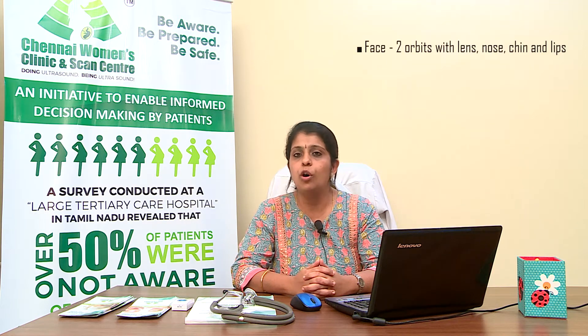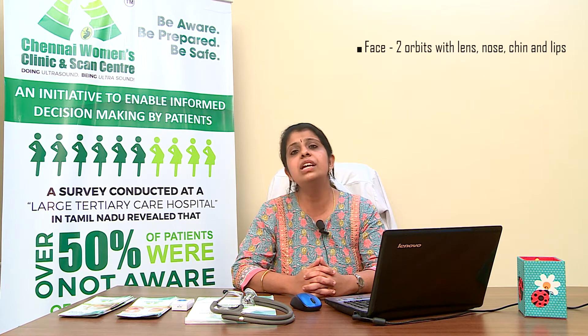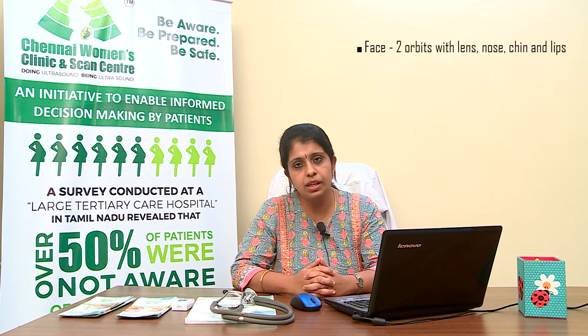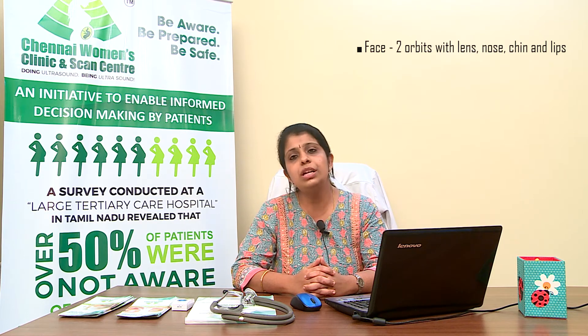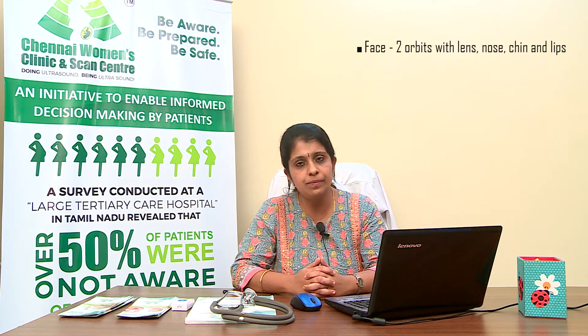Then we look at the face. In the face, we see both orbits with lens, nose, lips, and chin of the baby. If there is any gap or breach between the nose and the lips of the baby, that is noted. We usually do not check for the ears in the baby.